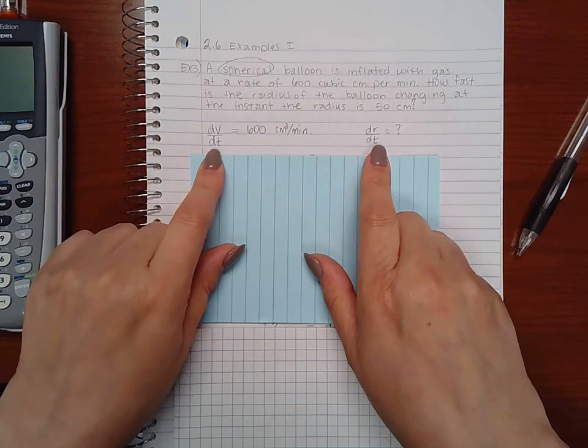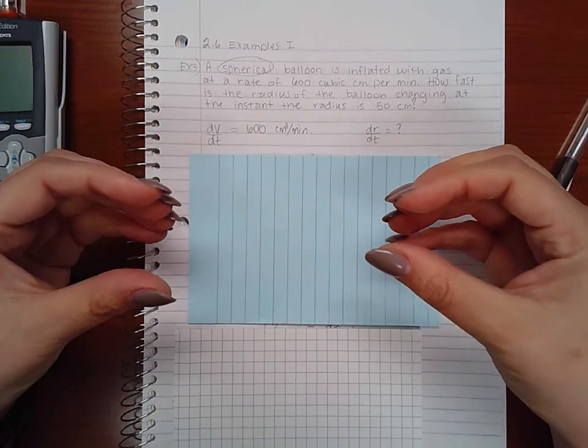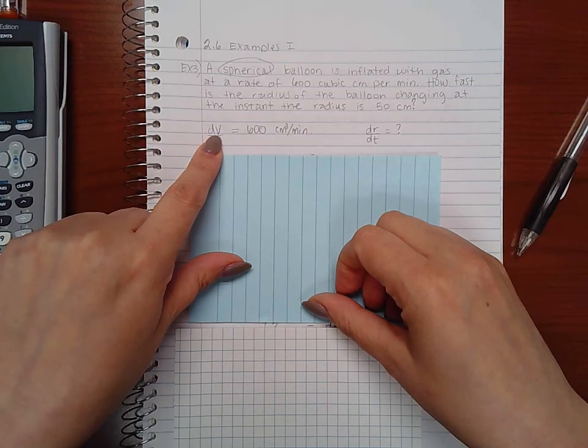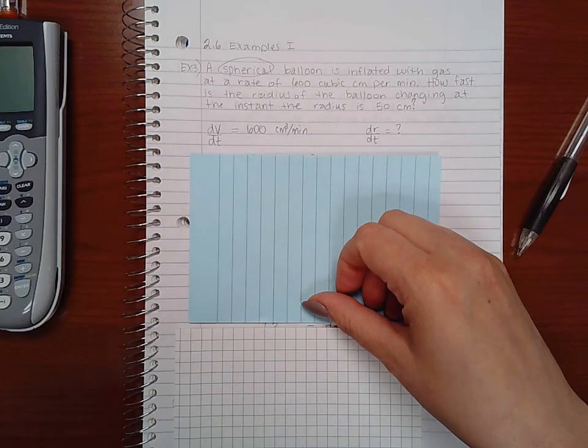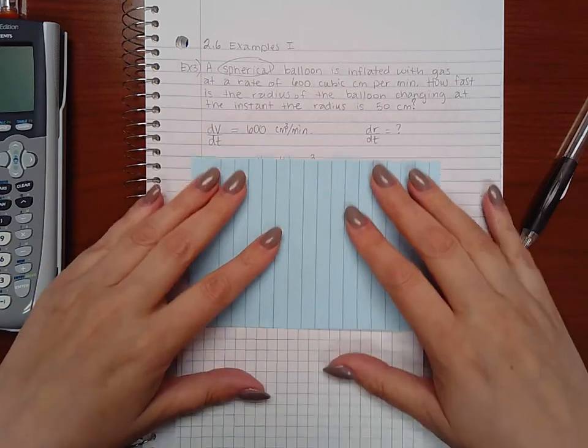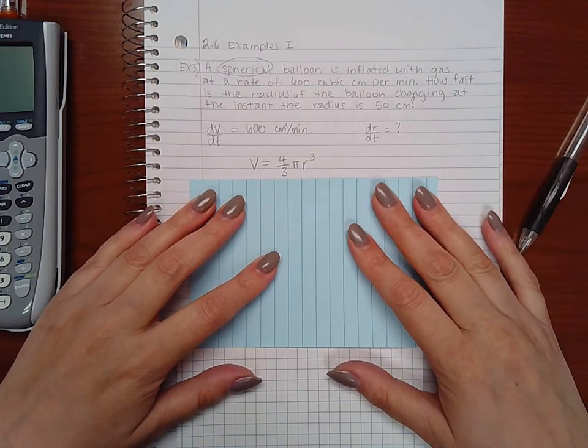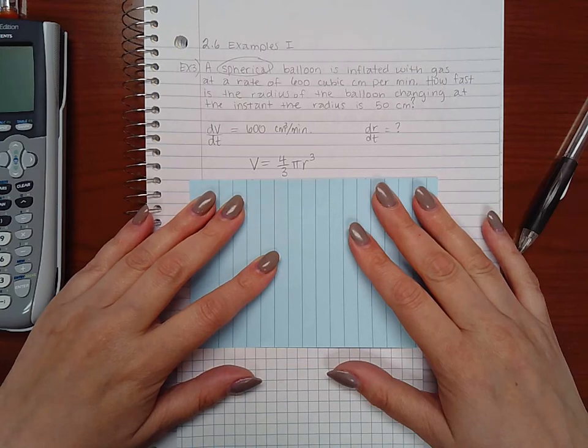Now in order for me to put these two bits of information together, I do need an equation that relates them together. I do know the equation for the volume of a sphere, which is why I circled that, so I knew which formula to take. So the volume of a sphere is V equals four-thirds pi r cubed.